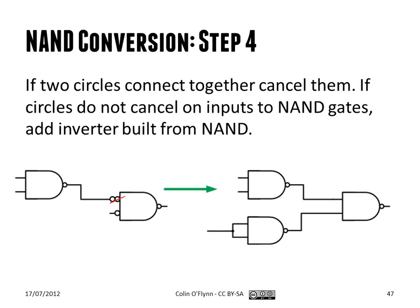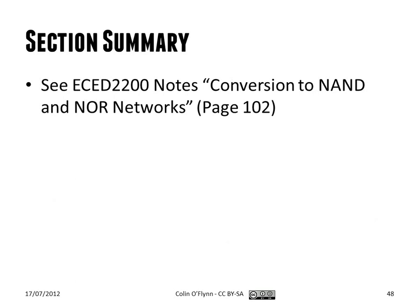The next step is to cancel those double inversions wherever they may happen. And if required, extract. So here we still have one inverted input. So we need effectively a NOT gate, but we build that out of NAND gates. And then you have a complete design. You can do the same thing for NOR gates in the exact same way.